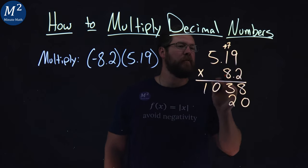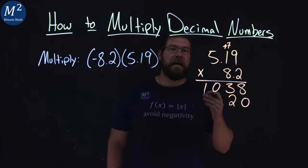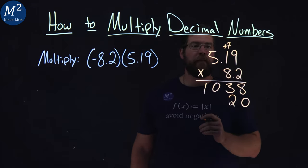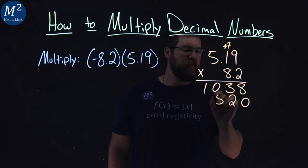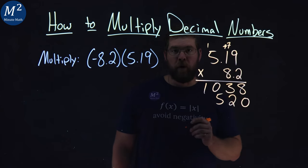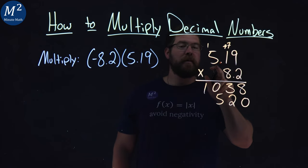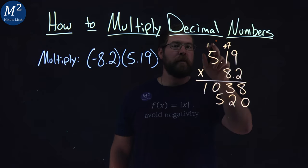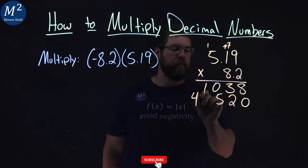carry the 7 over the 1. 8 times 1 is 8. We add 7, we get 15. 5 goes down here, carry the 1. 8 times 5 is 40, plus 1 is 41. 41 right there.